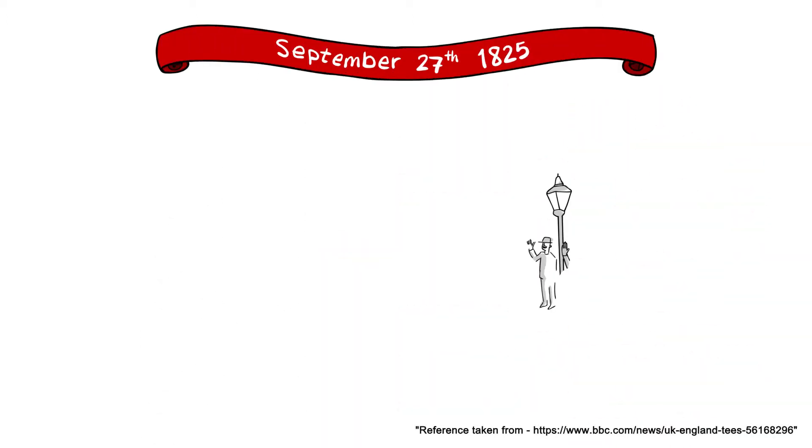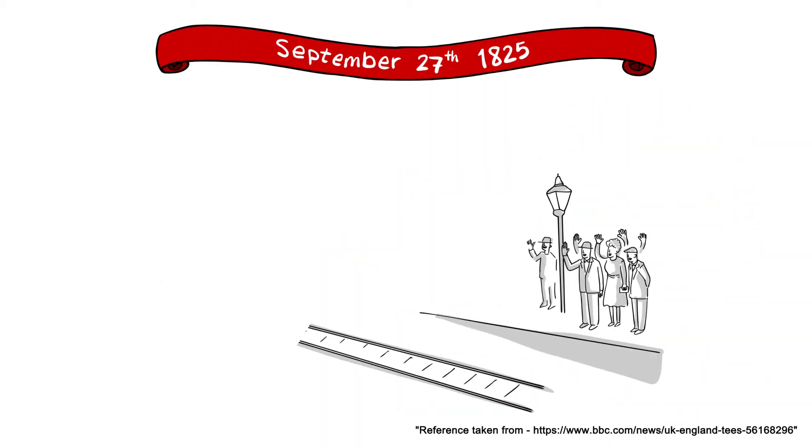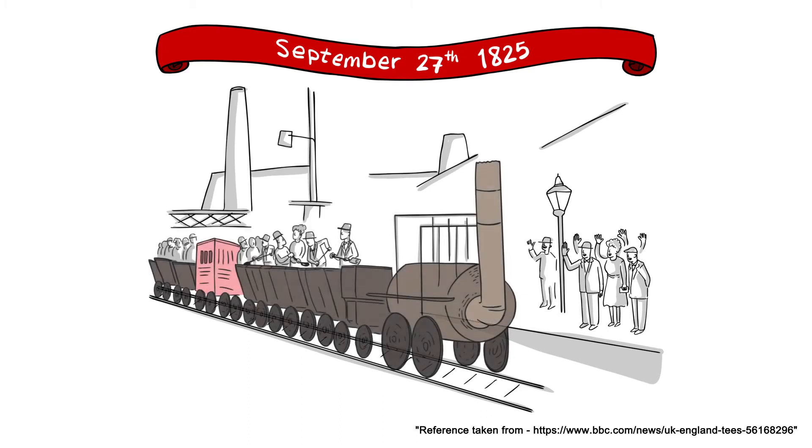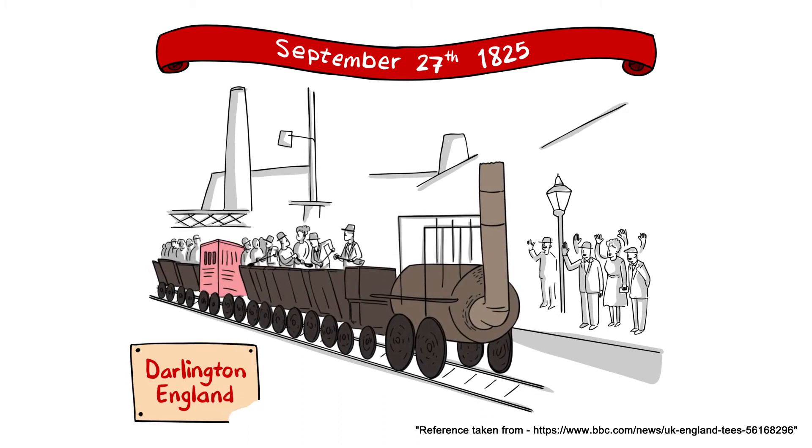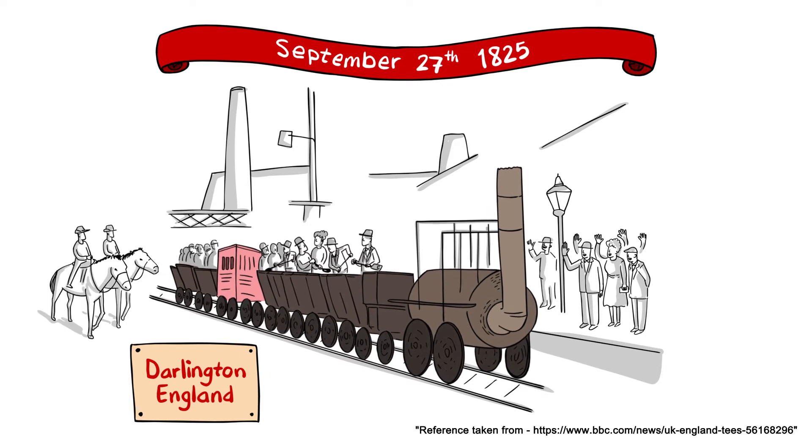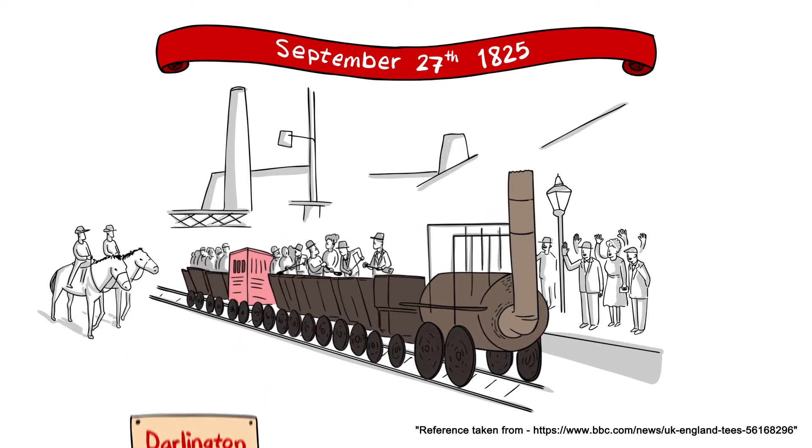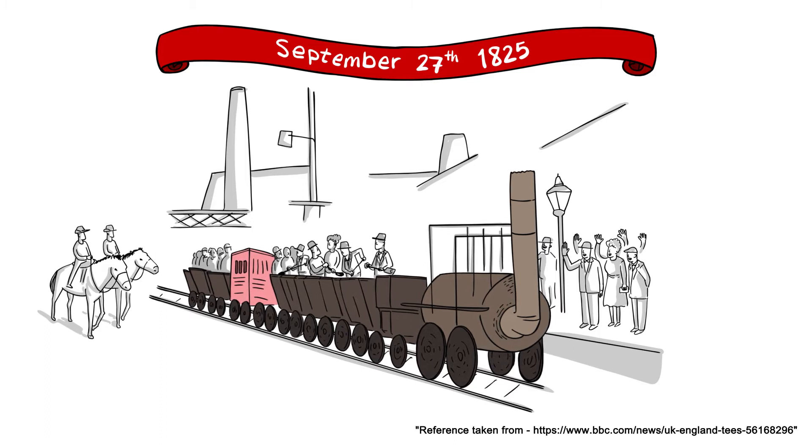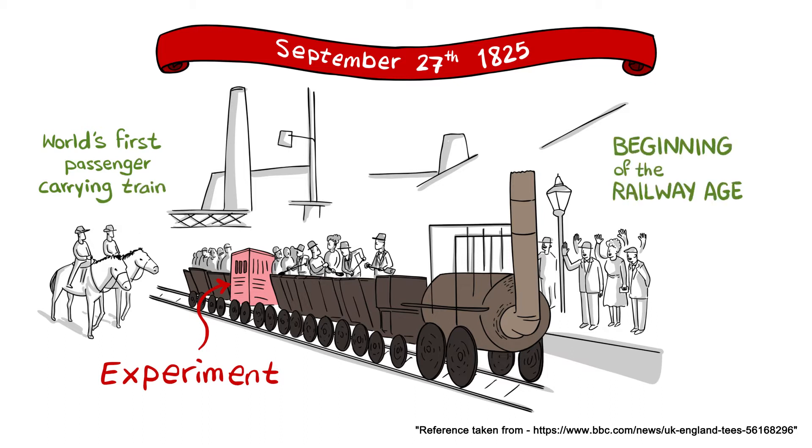On this day, thousands of people lined the track to witness locomotion number one make its way into Darlington on the Stockton and Darlington line in England. Exuberant horse riders flanked the locomotion which hauled several wagons of coal and flour. The locomotion also hauled the first purpose-built passenger carriage called experiment, marking the world's first passenger carrying train and the beginning of the railway age.